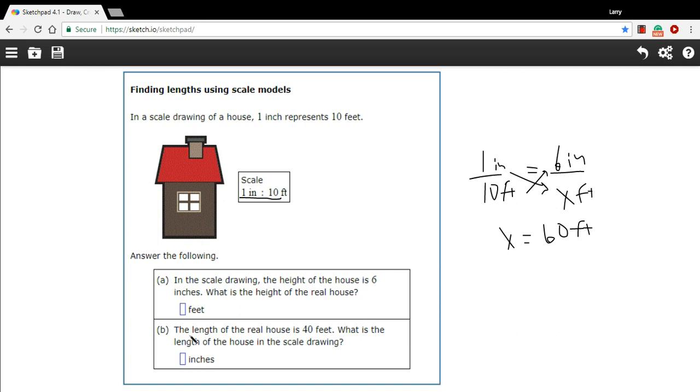Let's try it with this next one. It says the length of the real house is 40 feet. What is the length of the house in the scale drawing? So here's our ratio again for the scale model. It's 1 inch to 10 feet.